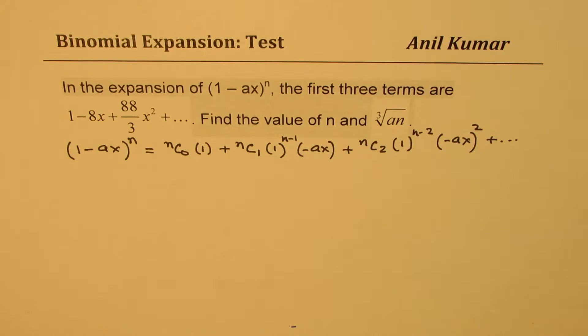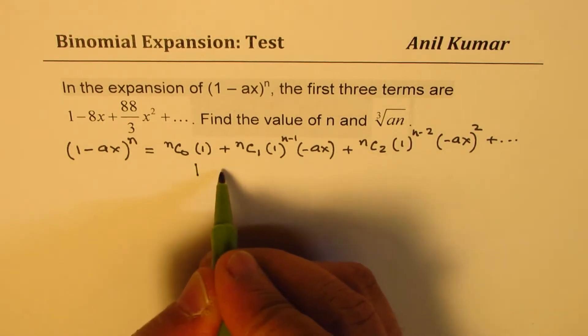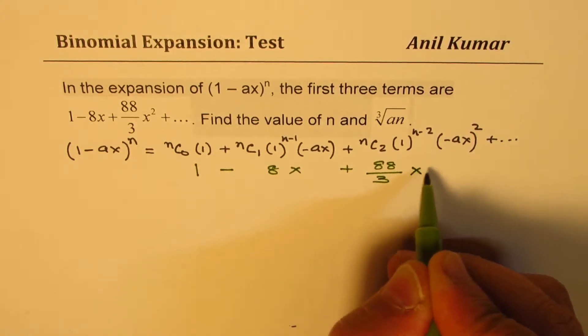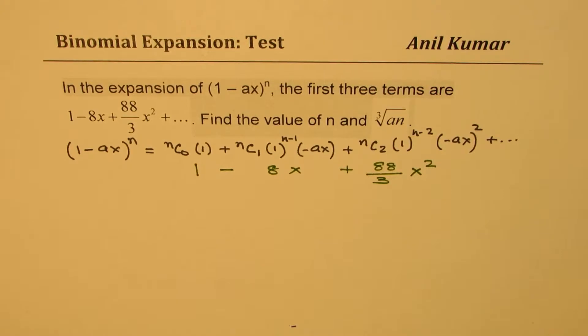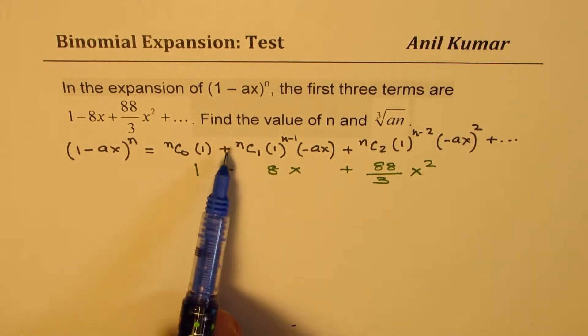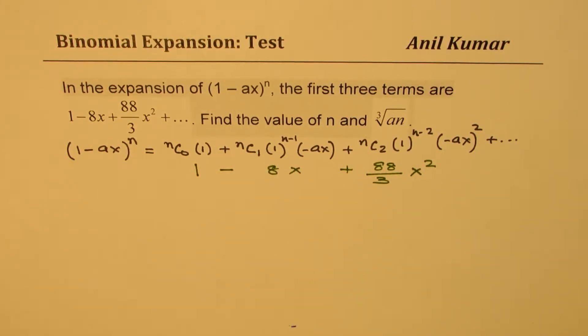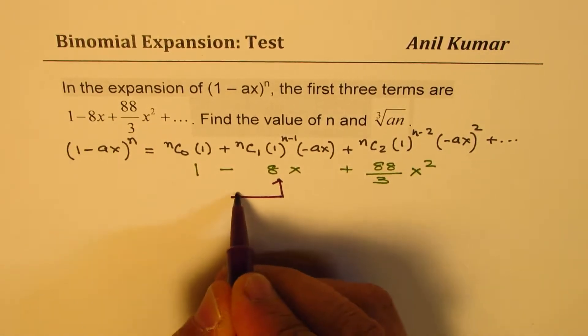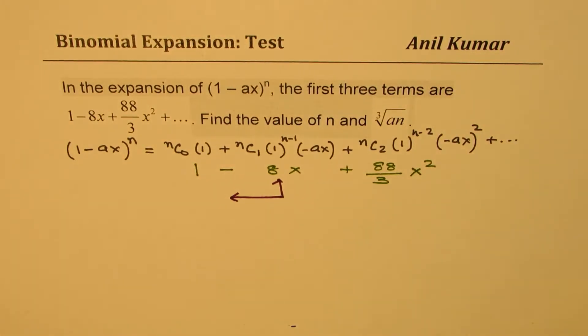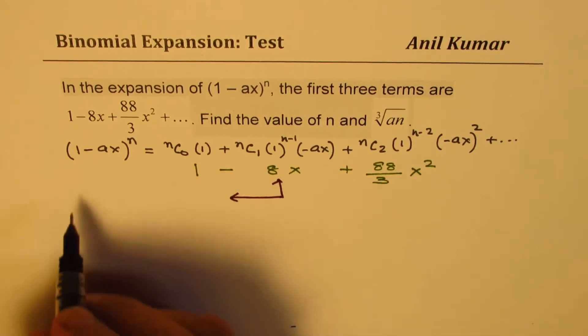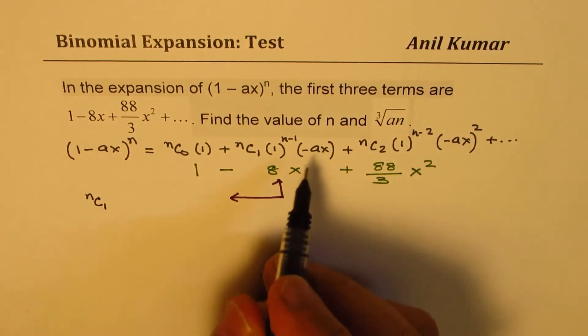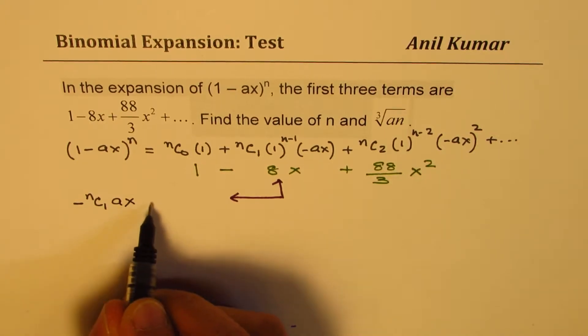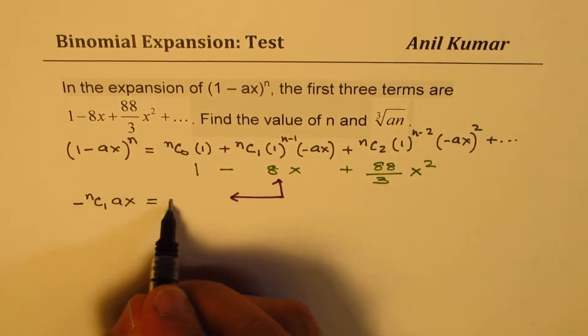We are given that these terms are 1 - 8x + (88/3)x². Comparing these terms, we get our relations. So the second term gives us: nC1 times 1, which is 1, and (-Ax) equals (-8x). Since nC1 is n, we can write -nAx = -8x.